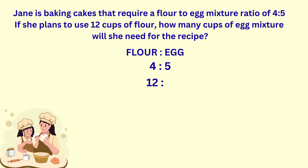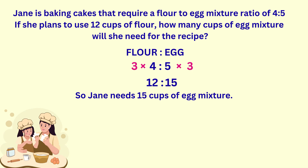One way to solve this is to ask yourself: what number was multiplied to the four in the original ratio to get twelve in the new ratio? That's three. Therefore, we need to multiply the egg part of the ratio by the same three in order to keep the ratio equivalent. Three times five is fifteen. So Jane needs fifteen cups of egg to go with her twelve cups of flour.